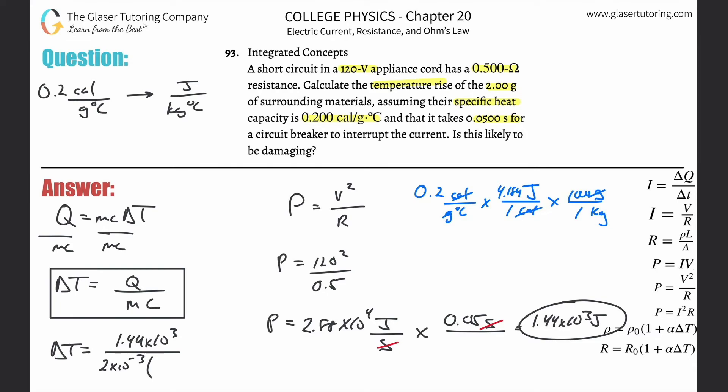0.2 times 4.184 times 1000. We're going to get about 836.8 joules per kilogram degrees Celsius. That value should sound more familiar now. Now I'm going to plug in the 836.8 and we're done. 1.44 times 10 to the 3rd divided by 2 times 10 to the minus 3 times 836.8. The temperature change is going to be 860-ish degrees Celsius.